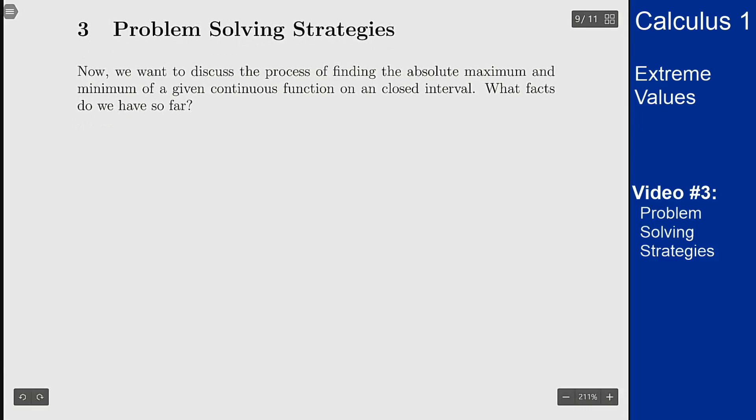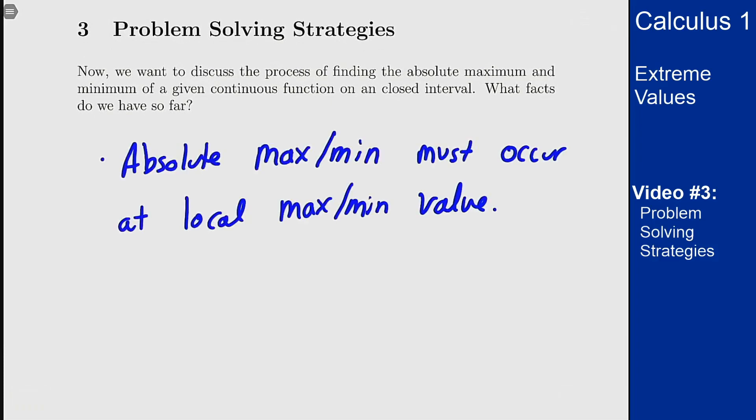Well first of all we know that the absolute maximum value must occur at a local maximum value. Secondly we know that interior local maximum values must occur at critical points where the derivative exists and equals zero or doesn't exist.